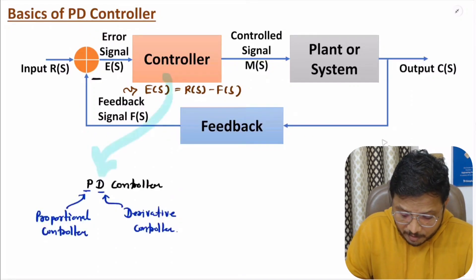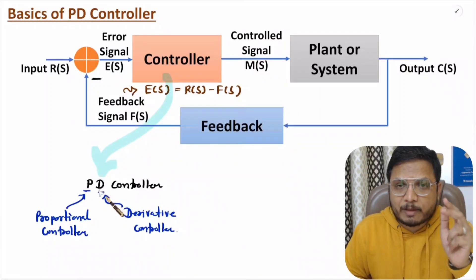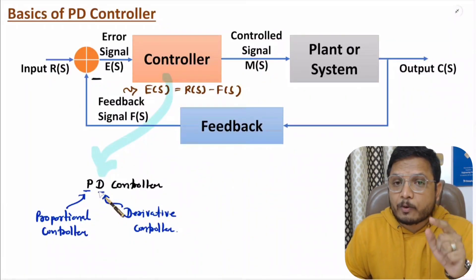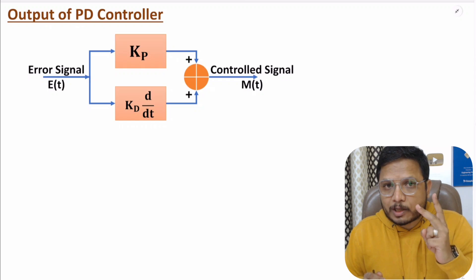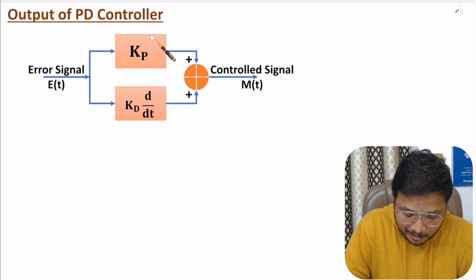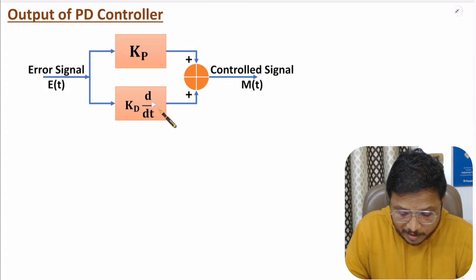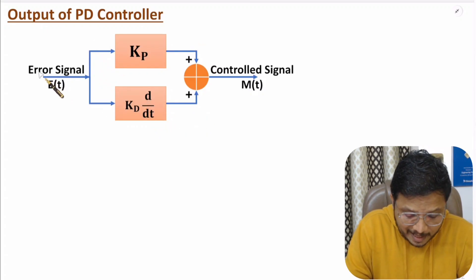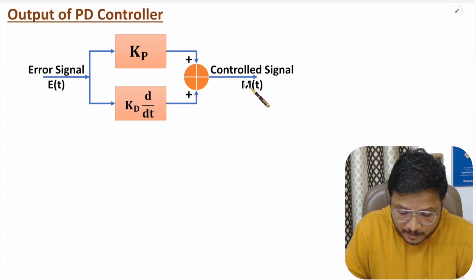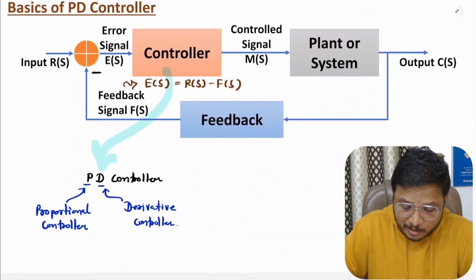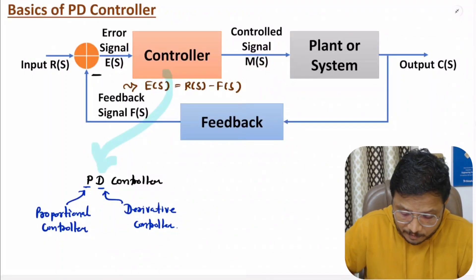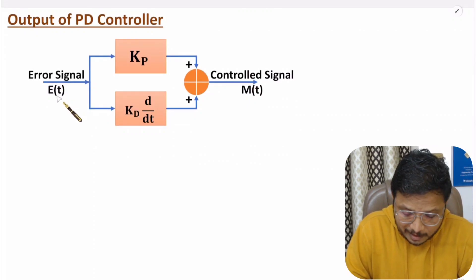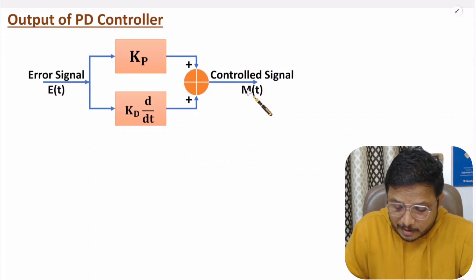Now I will explain the transfer function calculation for the PD controller. The PD controller is a combination of proportional and derivative controllers. The input to the PD controller is the error signal and the output is the controlled signal — consistent with the standard control system block diagram.